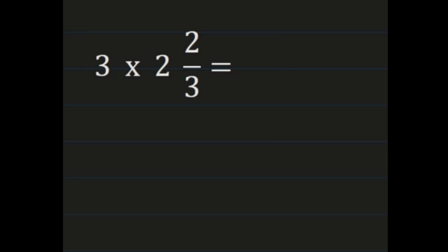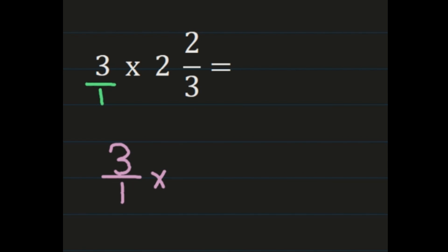For our final example, let's look at multiplying a mixed number by a whole number. The process is the same — we need to multiply numerator times numerator and denominator times denominator. First, the whole number must be written as a fraction, so we put 3 over 1. Then rewrite the problem with numerators and denominators lined up: 3 over 1 times 2 and 2/3.